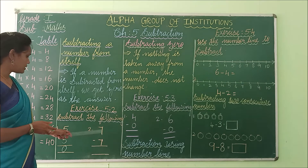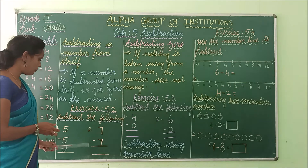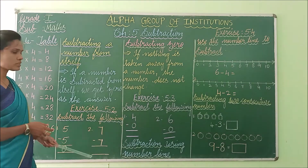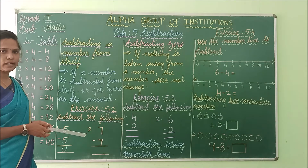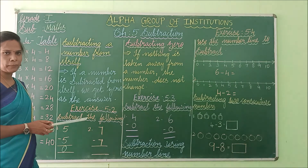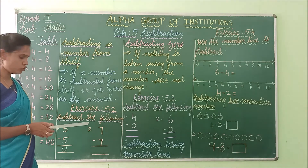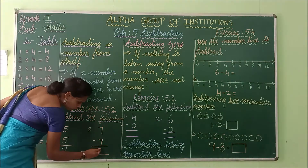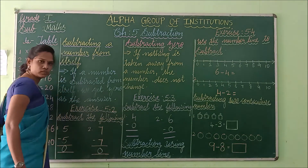See the second one: 7 minus 7. Subtracting a number from the same number itself — 7 minus 7 is also 0.